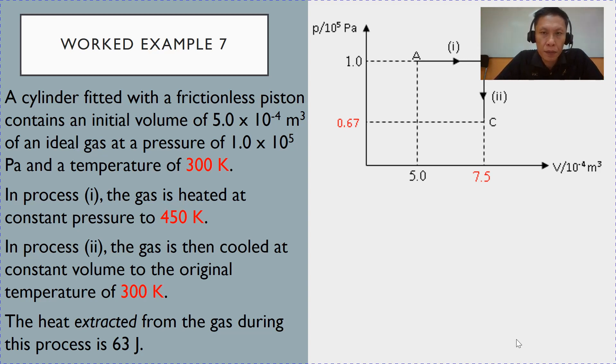Example 7. We are given a PV diagram with all the data given. We are told that at point A, the temperature is 300 Kelvin and it undergoes a process of constant pressure to reach state B, which is at 450 Kelvin. Subsequently, there is another process, process 2. The gas is cooled at constant volume, so there is a vertical line, to state C, where the temperature is 300 Kelvin.